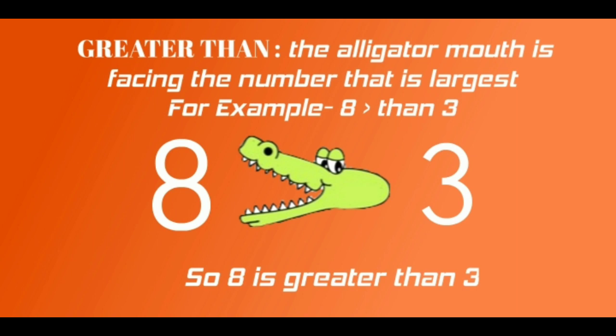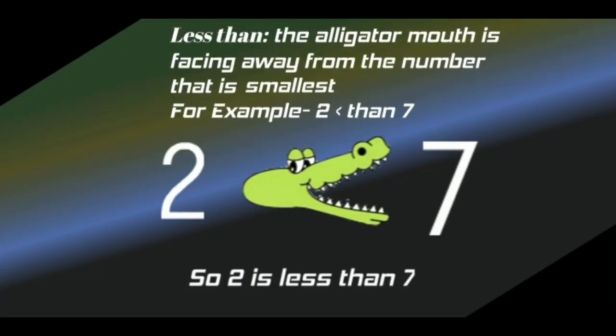Remember, greater than — the alligator mouth is facing the number that is largest. For example, 8. 8 is greater than 3. Less than — the alligator mouth is facing away from the number that is smallest.